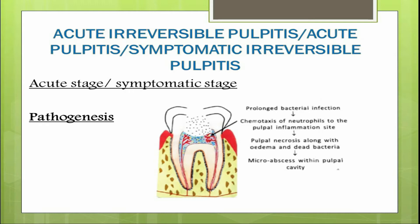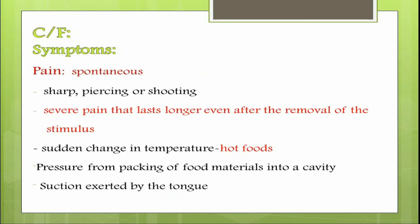Numerous small abscesses may form and eventually the entire pulp undergoes liquefaction and necrosis, sometimes referred to as acute suppurative pulpitis. A classic symptom of acute irreversible pulpitis is spontaneous pain that lasts longer even after removal of the stimulus. The pain is usually sharp, fierce, or intense and shooting in nature.